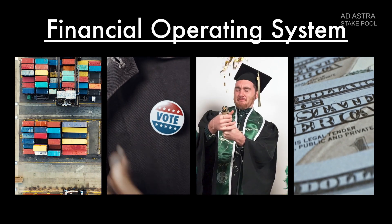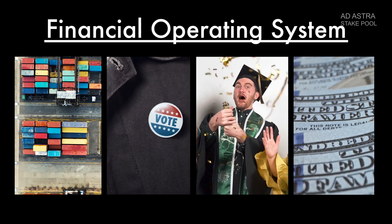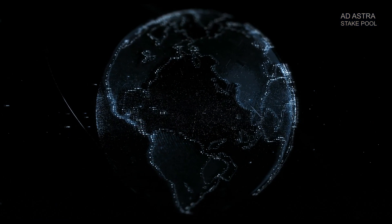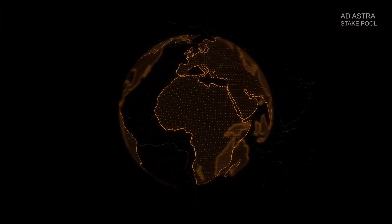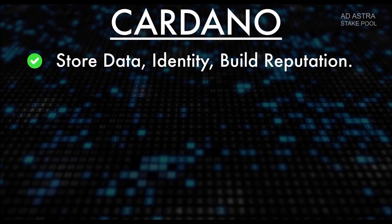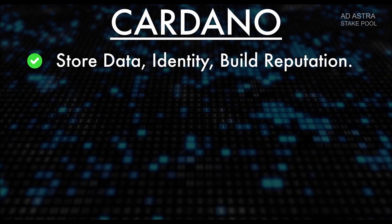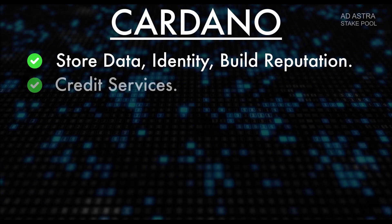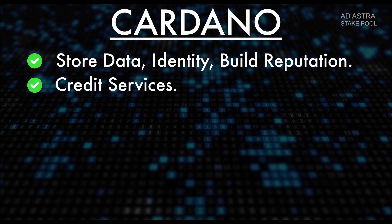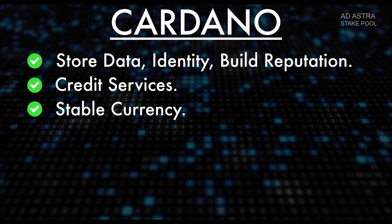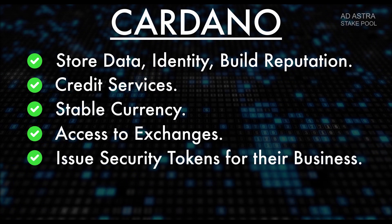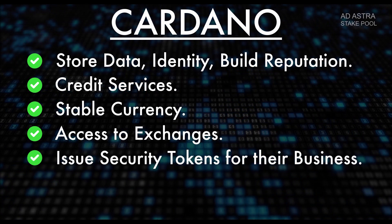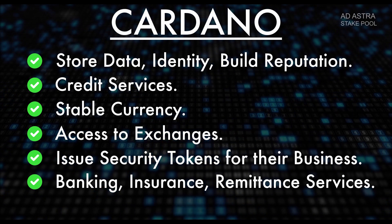We're also looking at financial applications. There's a whole bunch of DeFi things that are going to come, like stable coins and oracles and DEXs. But the general idea is that the system should be an end-to-end stack for economic identity. If some person enters the system, they should have a place for their data and identity to build a reputation, a way of getting credit, a reasonably stable currency they can send to anybody in the world, and the ability to interface with exchanges. If they have a business, they should be able to securitize it — banking services, insurance services, credit services, remittance services.